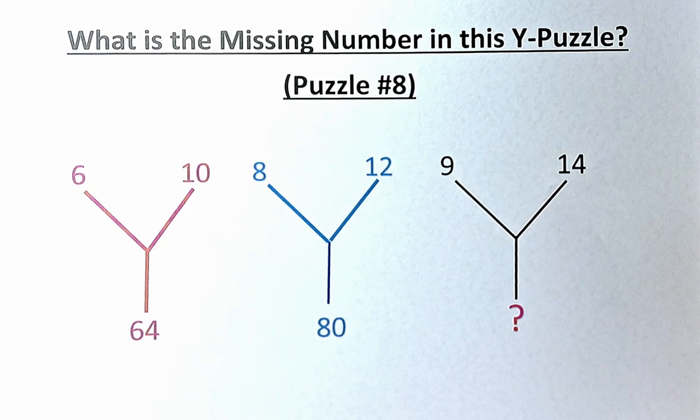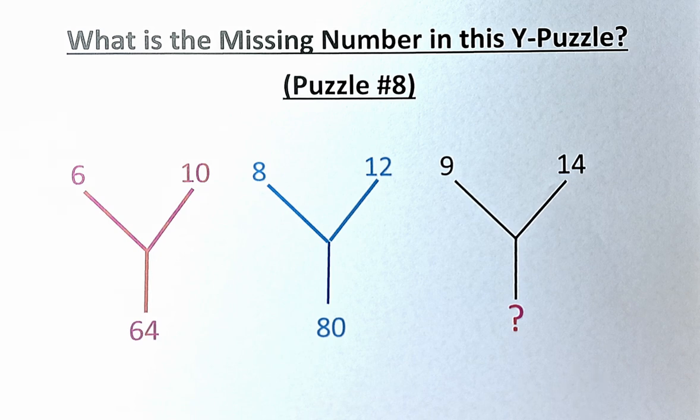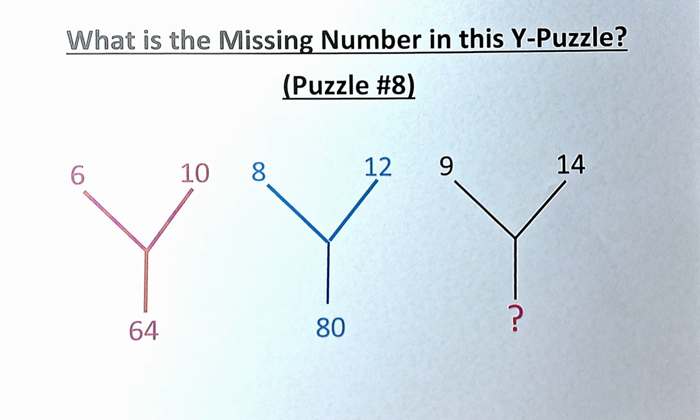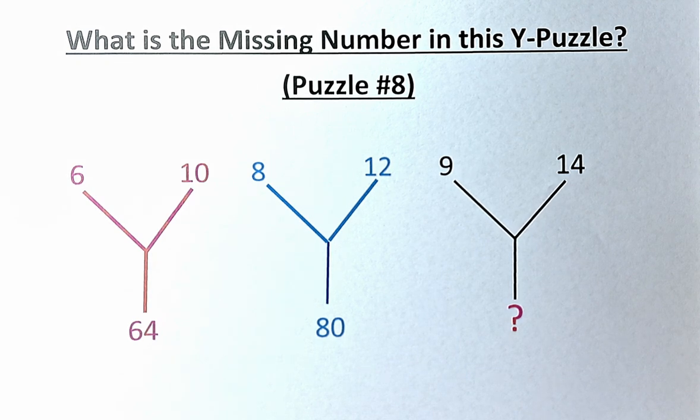In the first Y, we have 6, 10 and 64. In the second Y, we have 8, 12 and 80. And in the black Y, we have 9, 14 and a question mark.